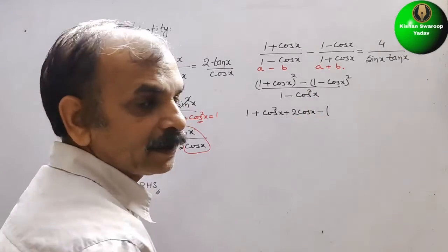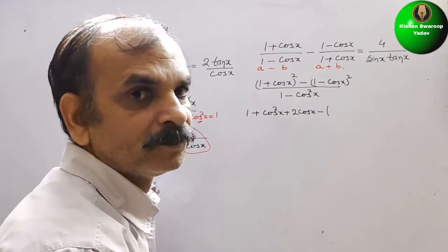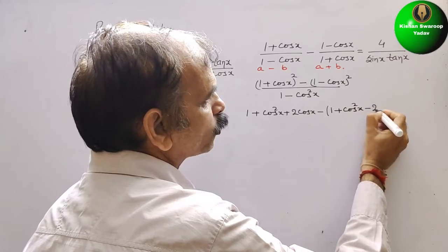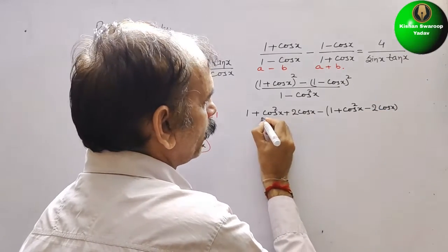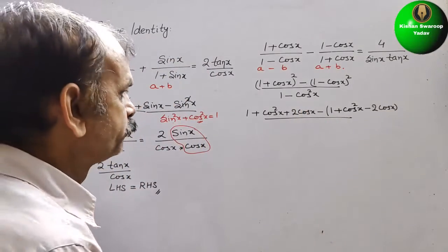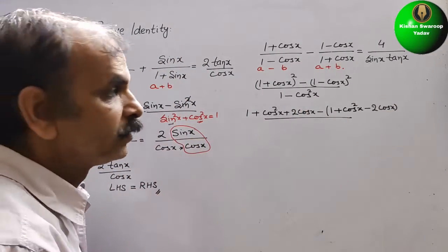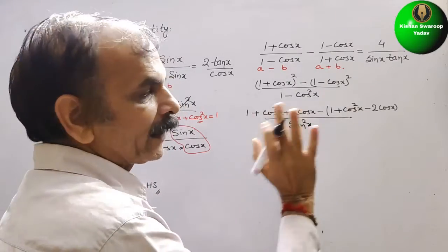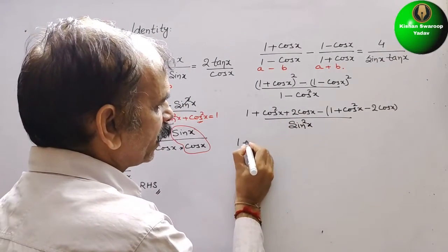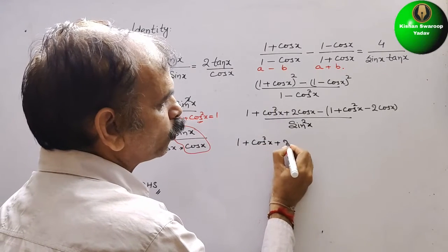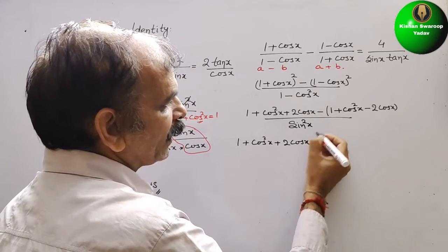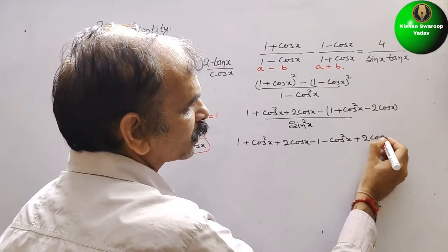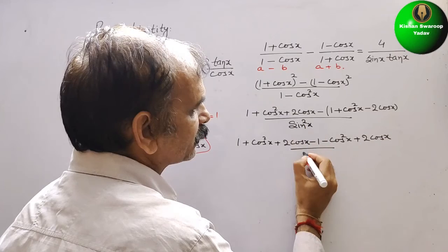Taking the bracket, with the minus sign: it will be 1 + cos²x - 2 cos x. The denominator is 1 - cos²x, which equals sin²x. So expanding fully in the numerator: 1 + cos²x + 2 cos x minus (1 - cos²x minus 2 cos x), giving us 1 + cos²x + 2 cos x - 1 - cos²x + 2 cos x, all by sin²x.